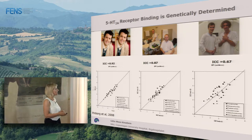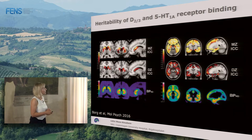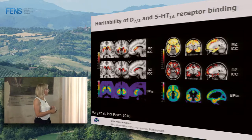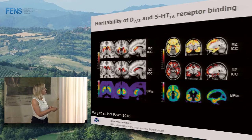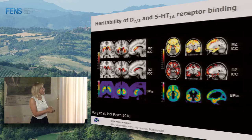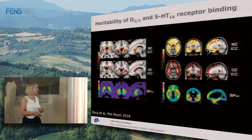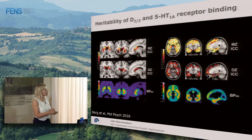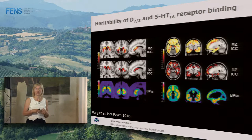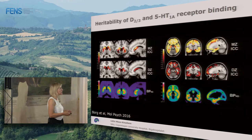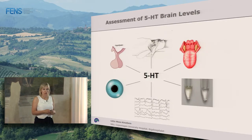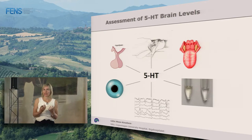Others at the Karolinska have looked at the heritability of D2/D3 receptors. In the upper panels for D2/D3 receptors, monozygotic twins have a very high ICC, which goes down somewhat for dizygotic twins. Likewise for the 5-HT1A receptor. It seems to be a general finding that receptor densities are largely genetically determined.